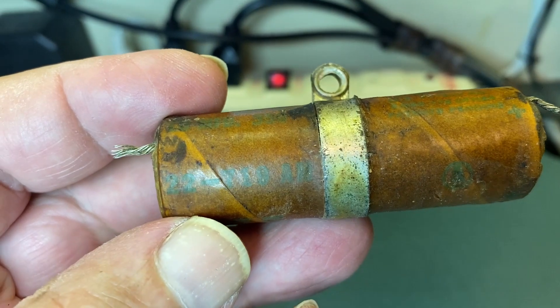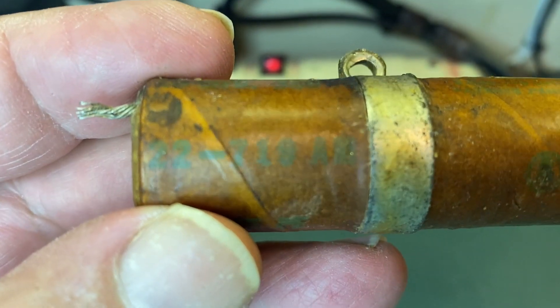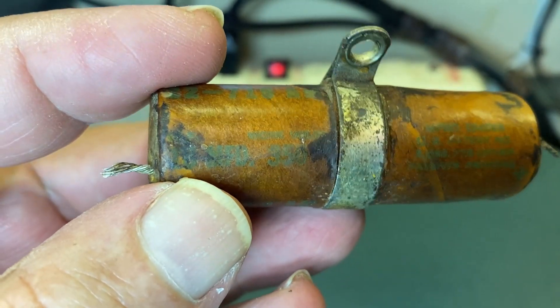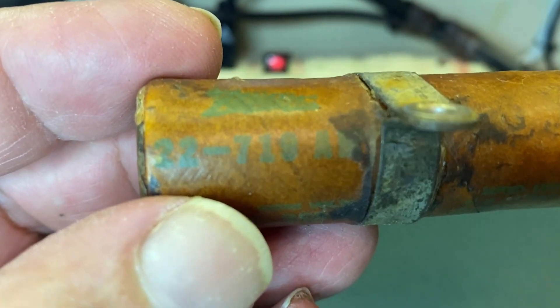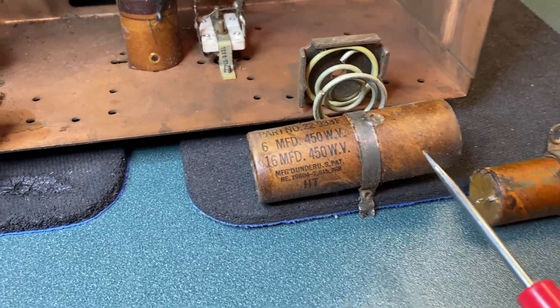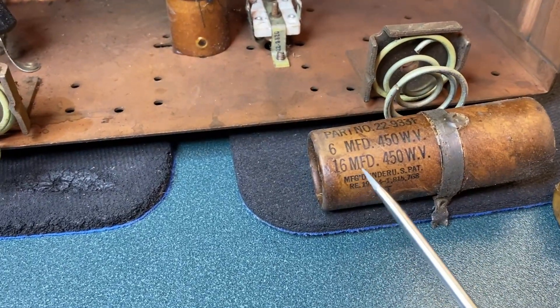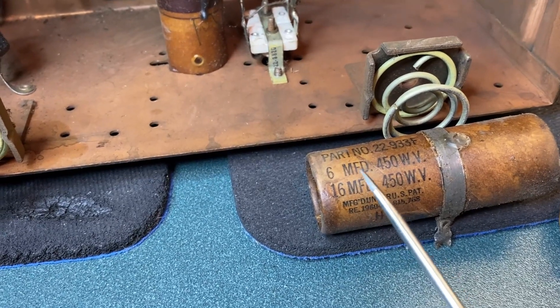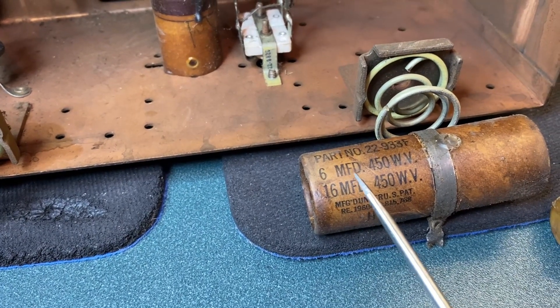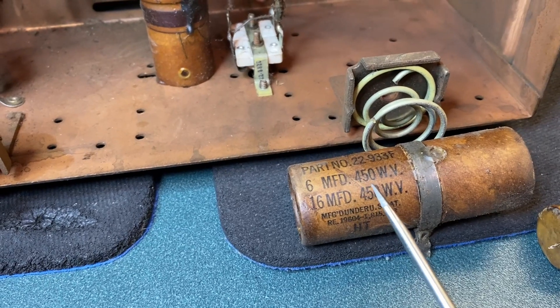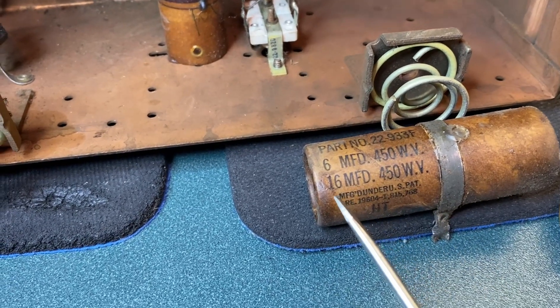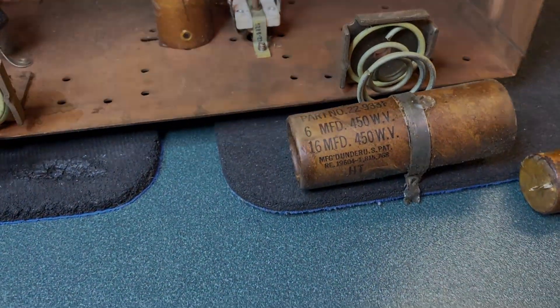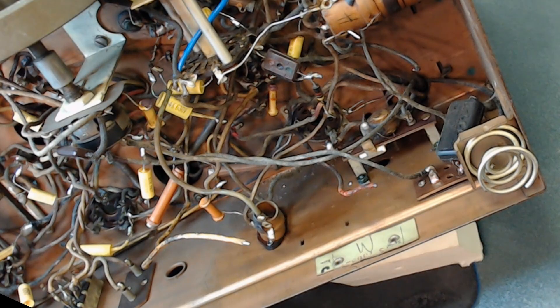Sometimes due to the age of the capacitors, the markings are erased or very hard to see. And this multi-capacitor identifies microfarads as well as voltages, but did not identify the wire colors for each capacitor. That also makes it confusing for those just getting started.